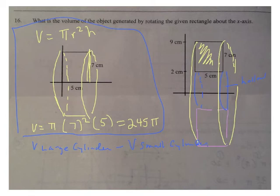So the large one, well, it has a radius, and its radius goes all the way from the x-axis up to the highest point. So the large one has a radius of 9. So I have π times 9 squared, and its height would be 5.